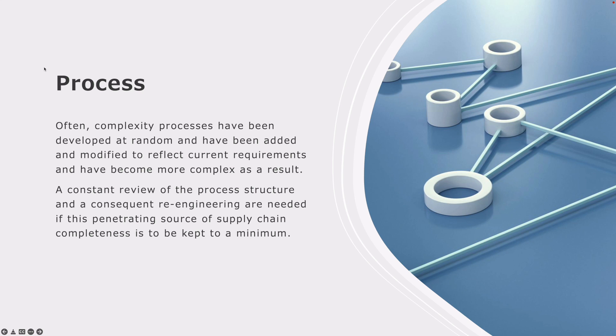In process complexity, often complexity processes have been developed at random and have been added and modified to reflect current requirements and have become more complex as a result. So to work with this process complexity, a constant review of the process structure and a consequent re-engineering are needed if this penetrating source of supply chain completeness is to be kept to a minimum. We always want to keep complexities at a minimum, because that is the way that a firm can be more responsive.